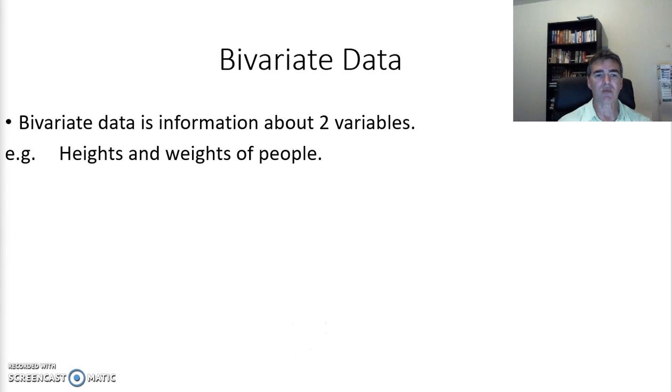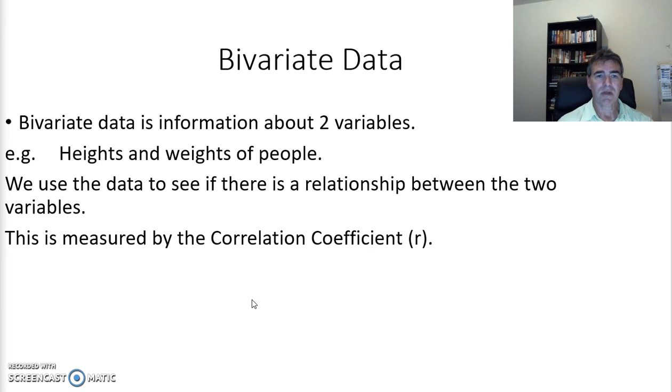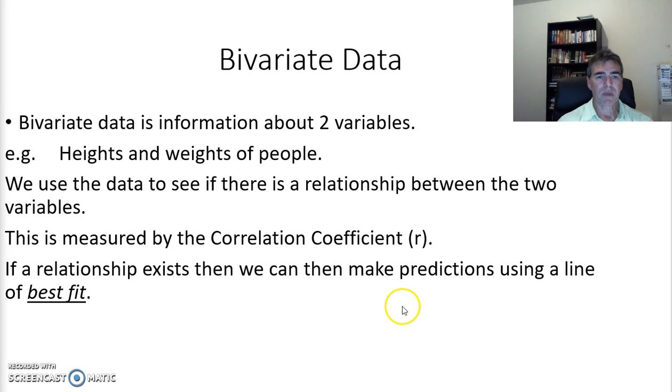We use the data to see if there is any relationship between the two variables, or there might not be any relationship at all. The relationship is measured by the correlation coefficient. If there is a relationship, we can have a line of best fit that we can use to make predictions.